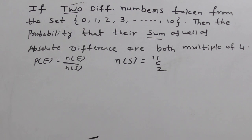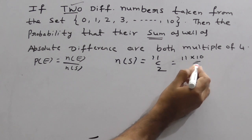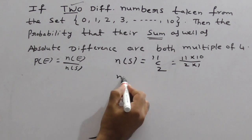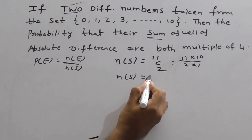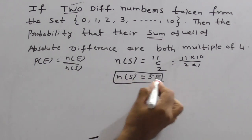What is 11 C2? You calculate here. So this is nothing but 11 into 10 by 2 into 1. Therefore, this N of S is nothing but 55. So we got N of S here.